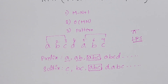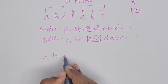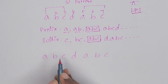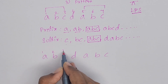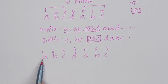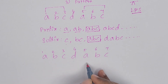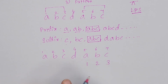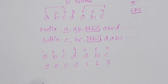We have to assign numbers. See, ABCDABC — total 7 characters: 1, 2, 3, 4, 5, 6, 7. These first 3 characters ABC are again repeating at the end. So we will assign 1, 2, 3 because these 3 are repeating. For the remaining characters, we have to assign 0. Like this, we create the LPS table.